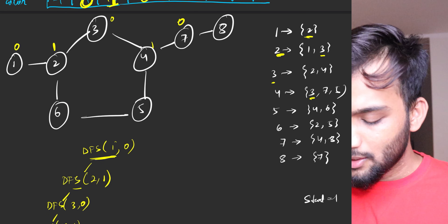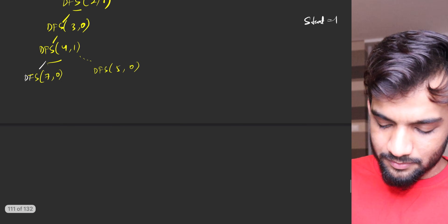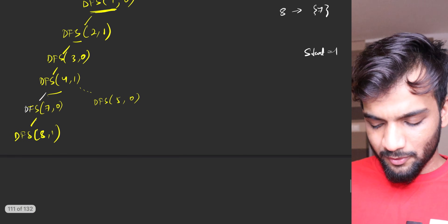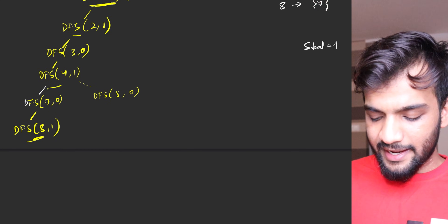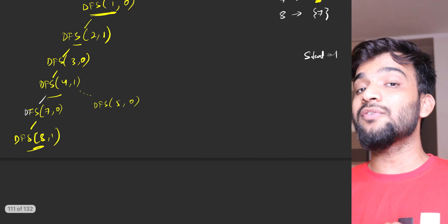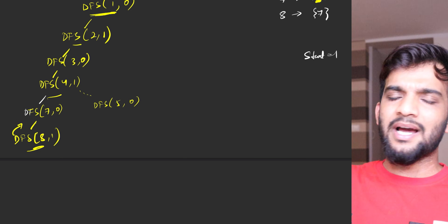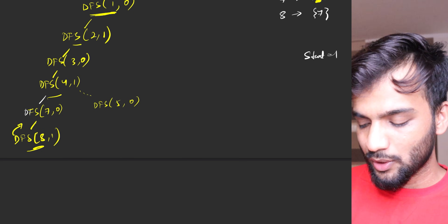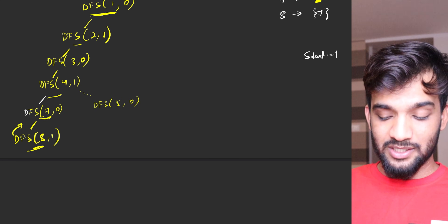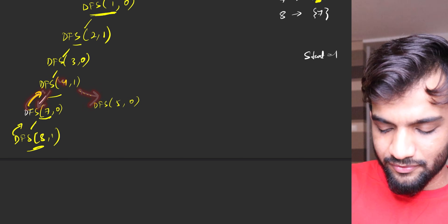Node seven has four - already colored - and eight which is not colored. So go to eight with the opposite color one. DFS of eight with color one. Eight only has neighbor seven, already colored with zero, which is the opposite color - perfect. Eight has no further nodes, so it returns with no problem. Seven's job is done, returns back. Four's call for seven is over with no problem, so now it goes to five.